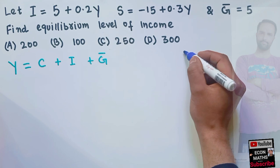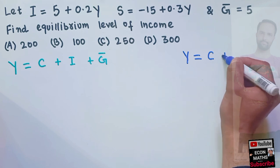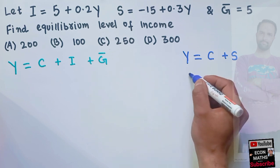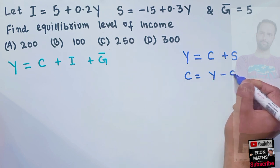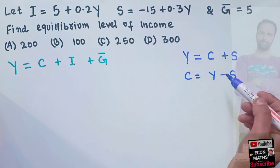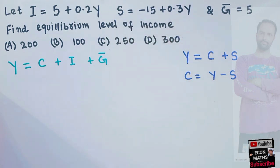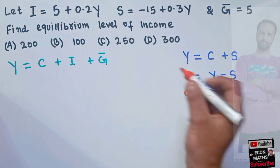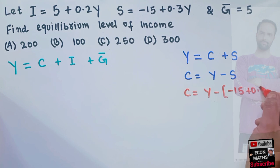We also know that total income is equal to consumption plus savings. From this relation, we can find out C — that means C is equal to Y minus S, meaning consumption is equal to total income minus total savings. The savings function is being given to us, so we can write C is equal to Y minus the savings function, which is minus 15 plus 0.3Y.